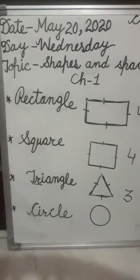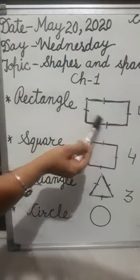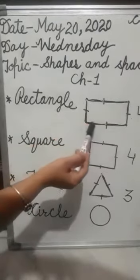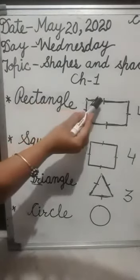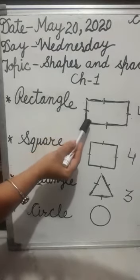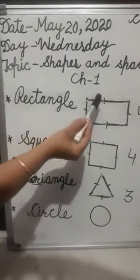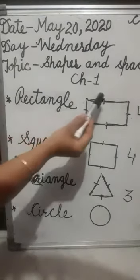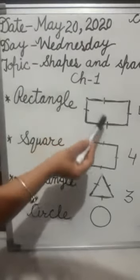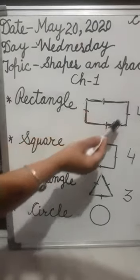Number one: Rectangle. This is rectangle shape. It has four sides — one side, two side, three side, four side. It has four corners. जो हमारी one side से two side को match कर रहे हैं, उनके बीच का जो space है, that are corners. The opposite sides are equal in rectangle shape. Rectangle shape में जो opposite sides होती हैं — this one and this one are equal. So it has four sides, four corners, and the opposite sides are equal.